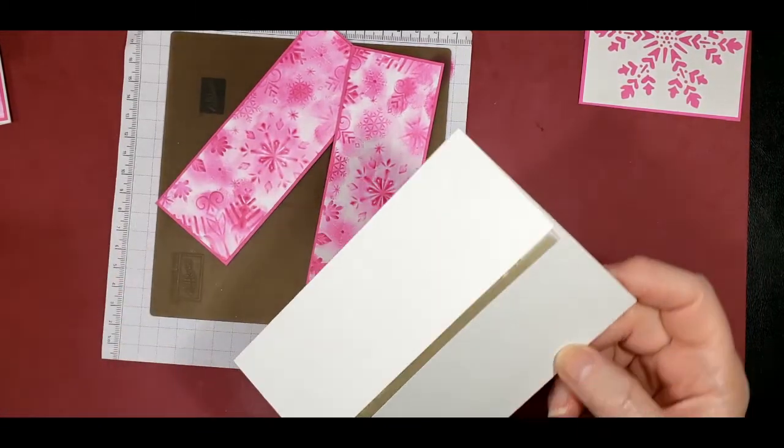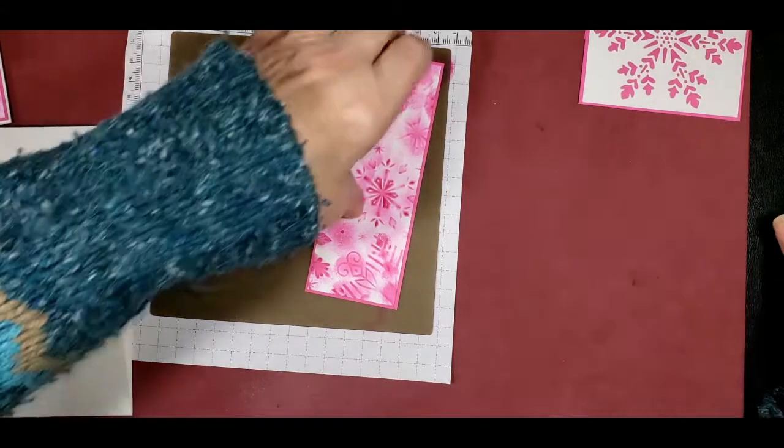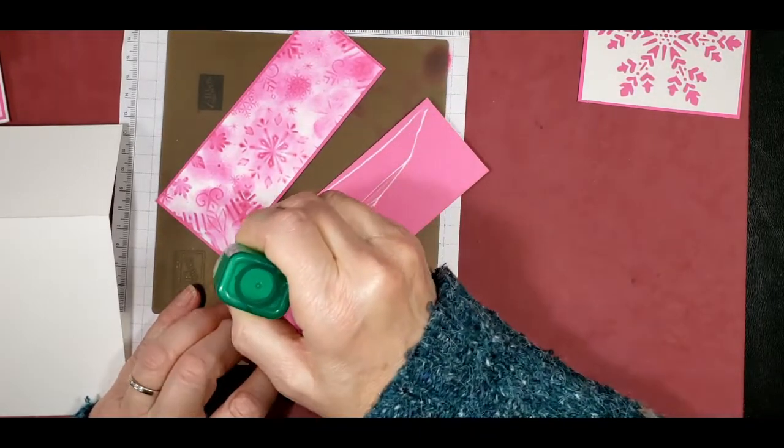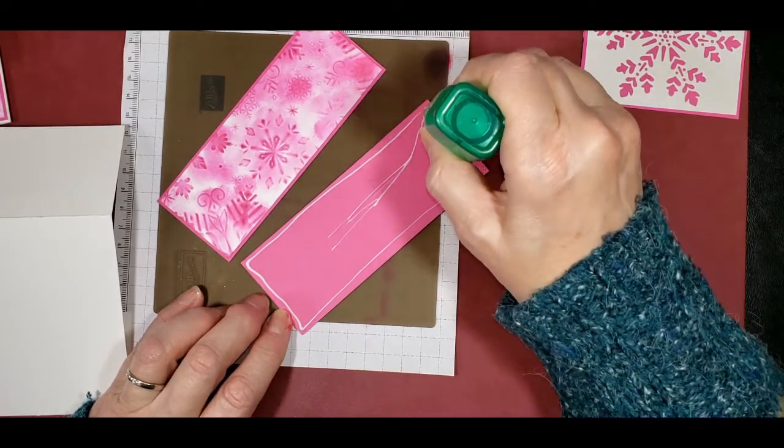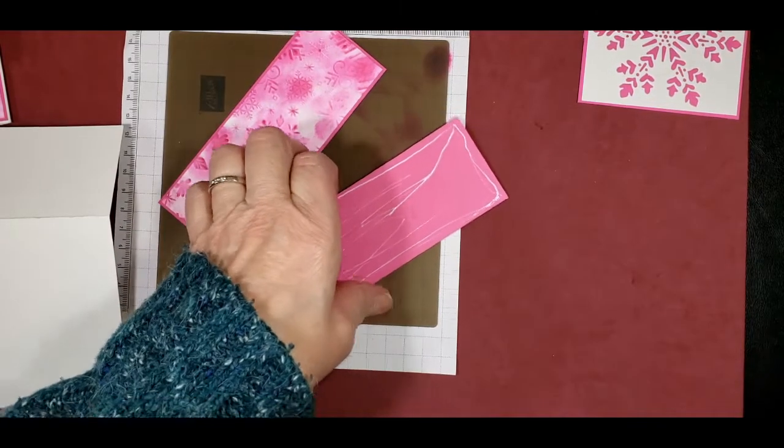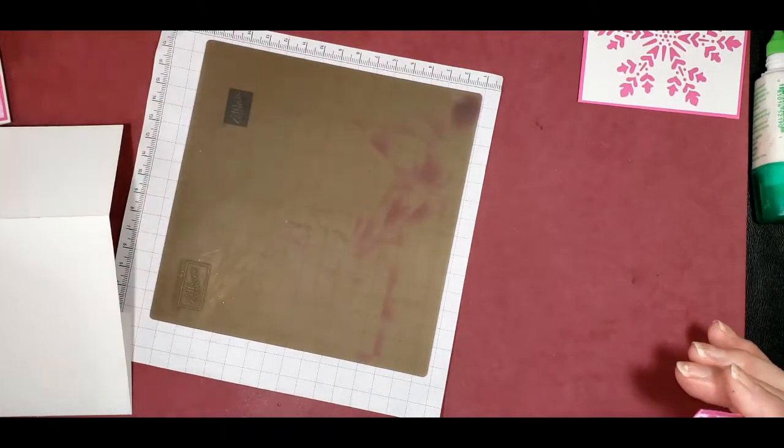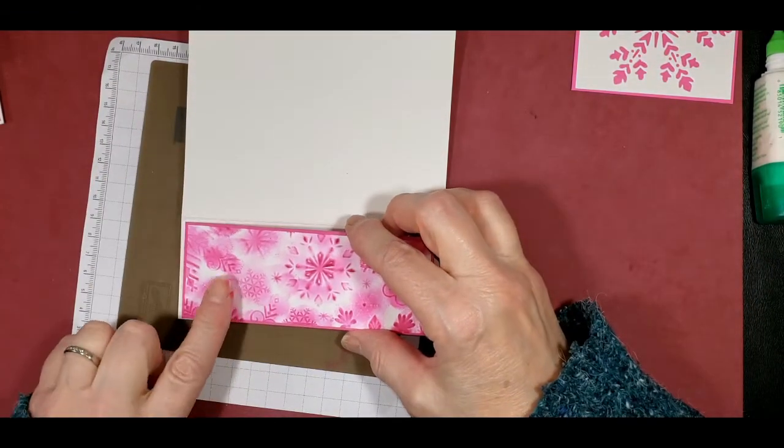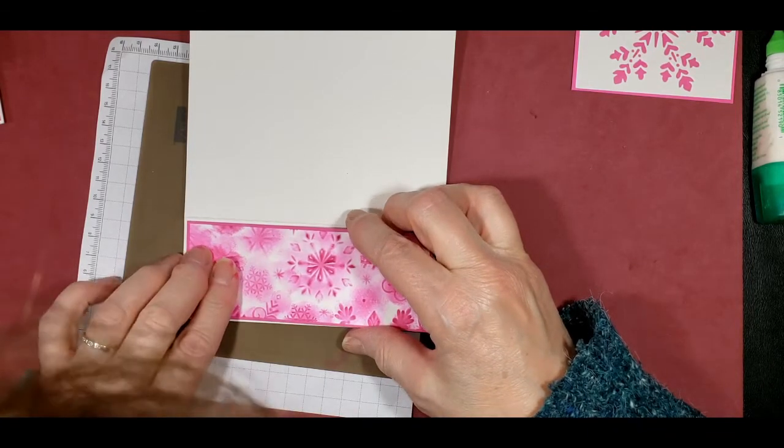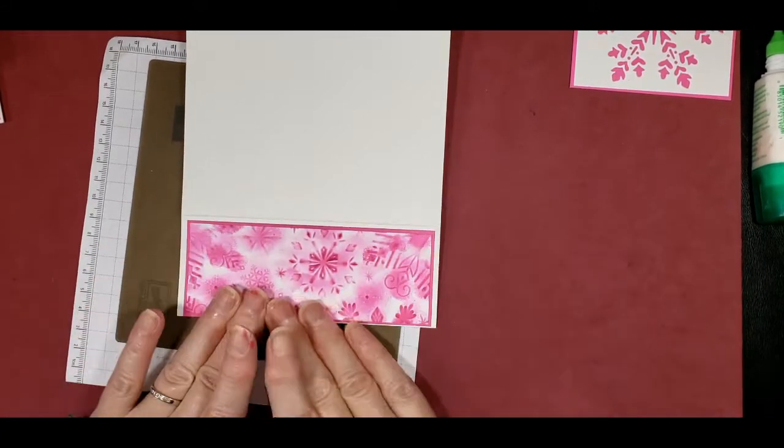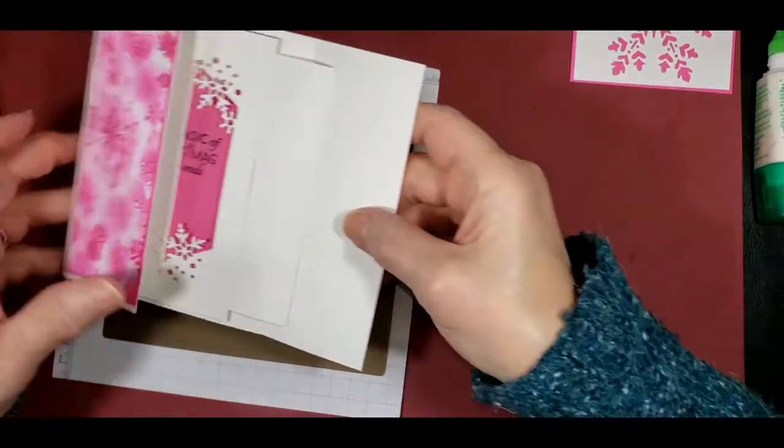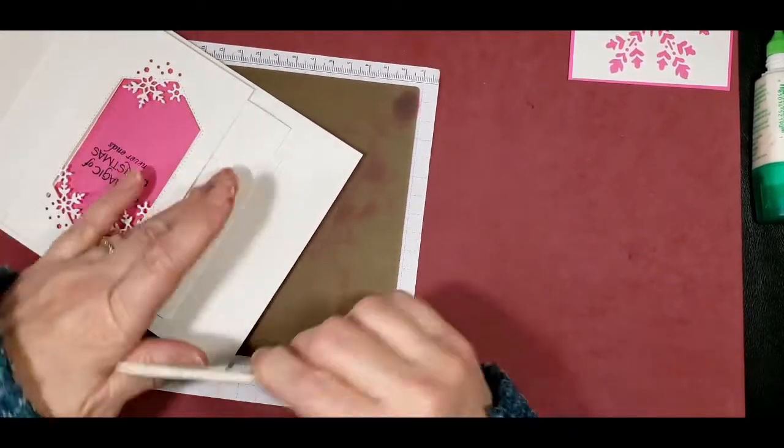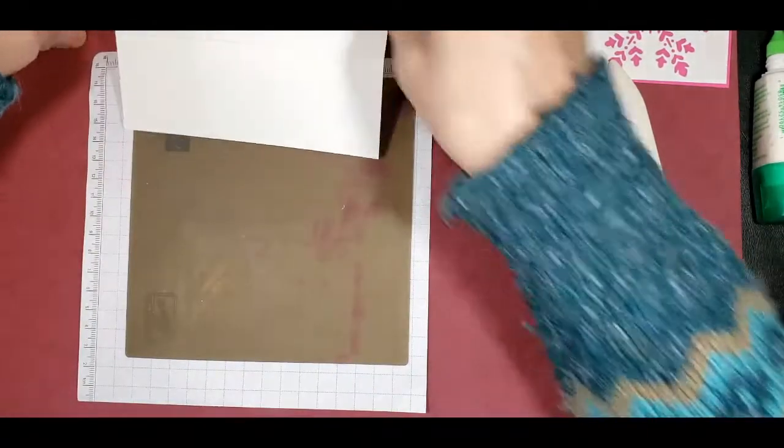And then we're going to glue those onto the card base. Start in the middle, so if it comes out too strong then I can adjust it one way or the other. So I want to center this on the card base. And then we'll use a bone folder on the inside. And we'll do this next side.